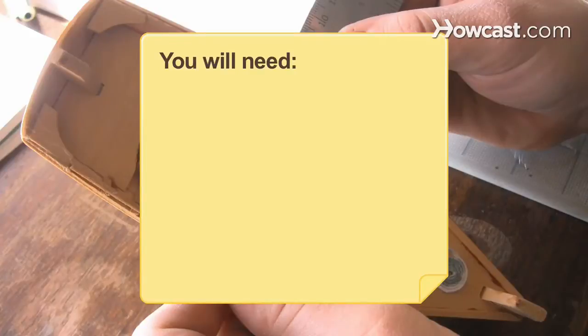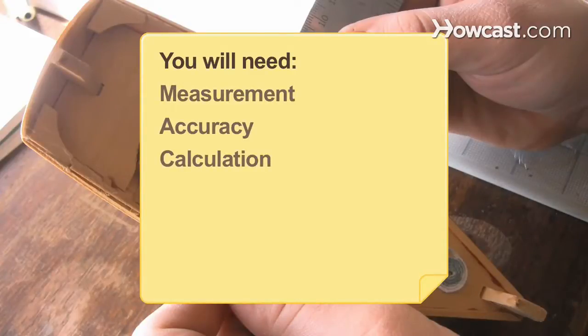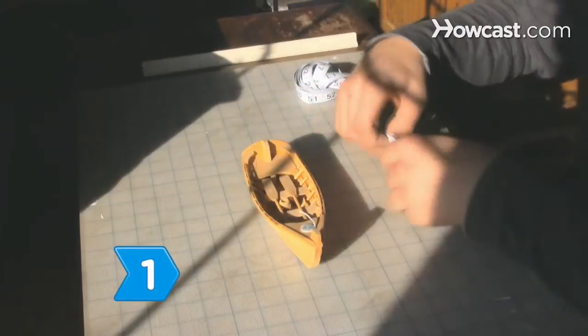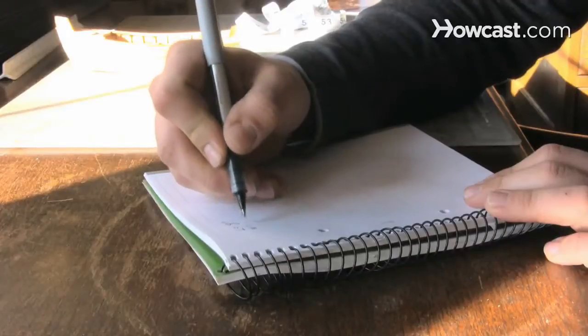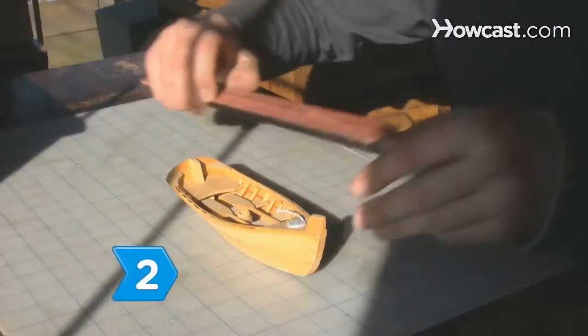You will need measurement, accuracy, and calculation. Step 1: Understand that relative error is an indication of how accurate a measurement is relative to the size of what is being measured.